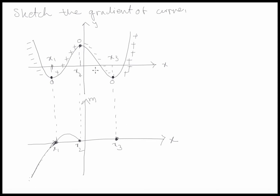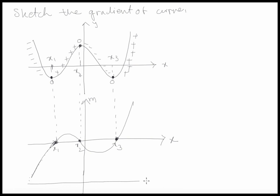Then here again you will have to be negative, which means you need to be underneath the x-axis. It starts from zero, goes back to zero — so the only way for that to happen is to have a curve that goes down and then changes direction and goes back to zero. Then here you will have a positive gradient again, meaning you're going to be above the x-axis. So now what we want to do is draw the gradient of this new curve.